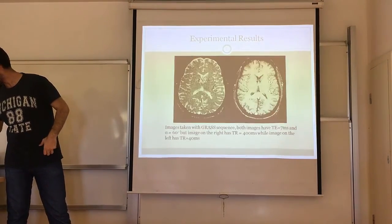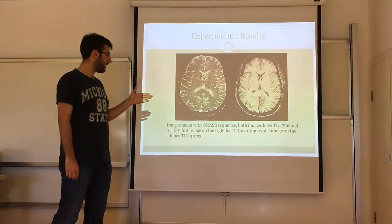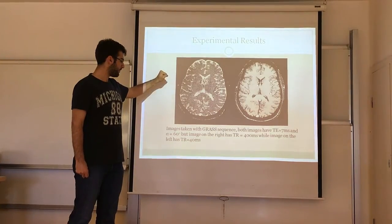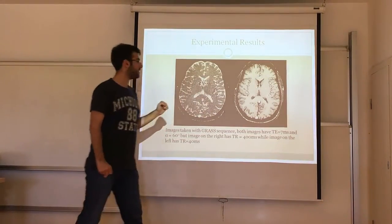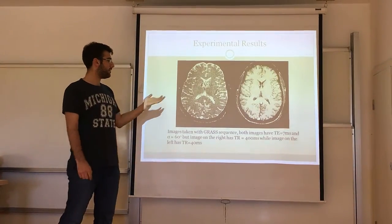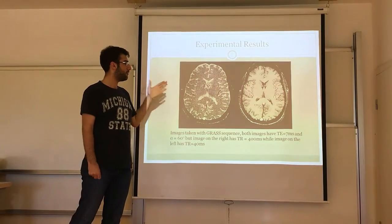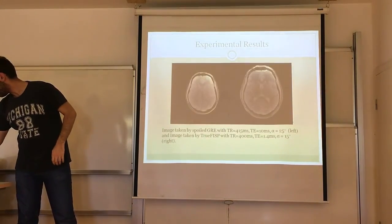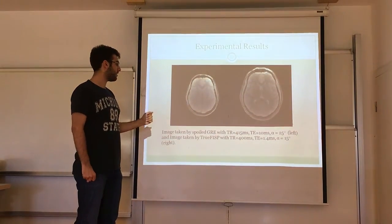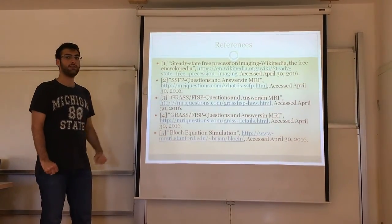These additional images — not taken by me — show the GRASS sequence with TE 7 ms and flip angle 60 degrees. One image has TR 40 ms and the other has TR 400 ms. When we keep TR very short we get sharper image contrast, and when we keep TR long we get less contrast, closer to a proton density-weighted image. This is quite similar to our spoiled gradient echo pulse sequence or a True FISP sequence with very long TR. That's all I wanted to present. These are my references. Thank you very much for your patience.